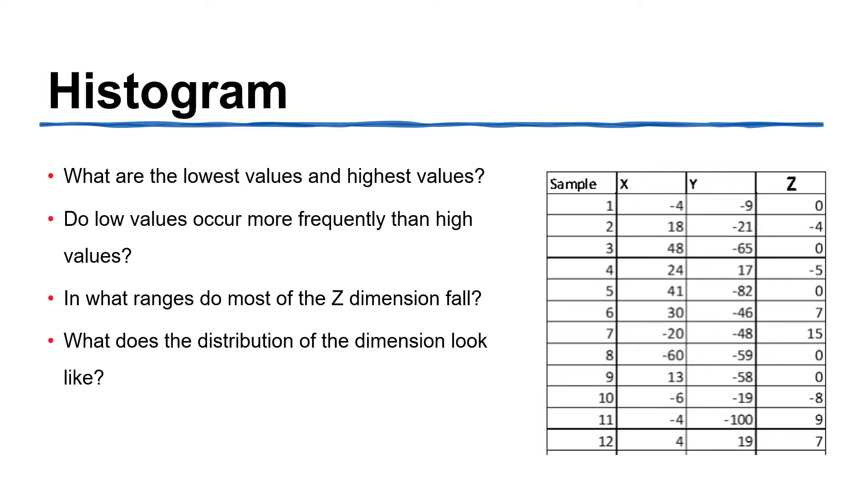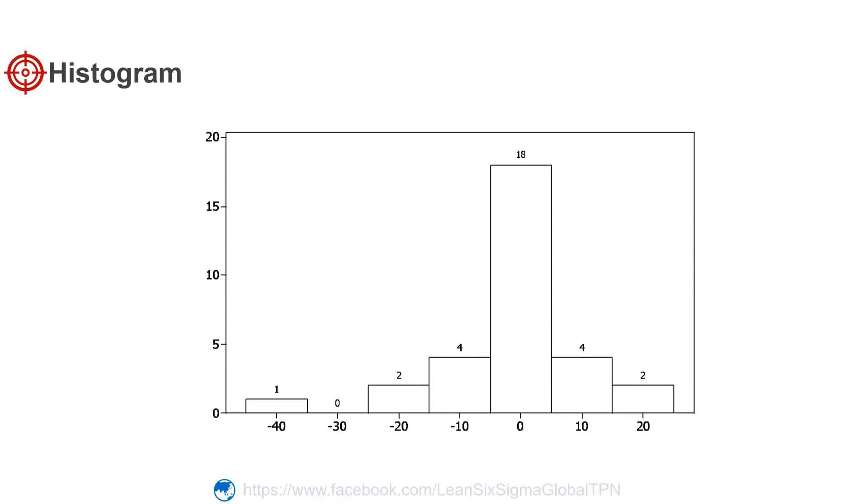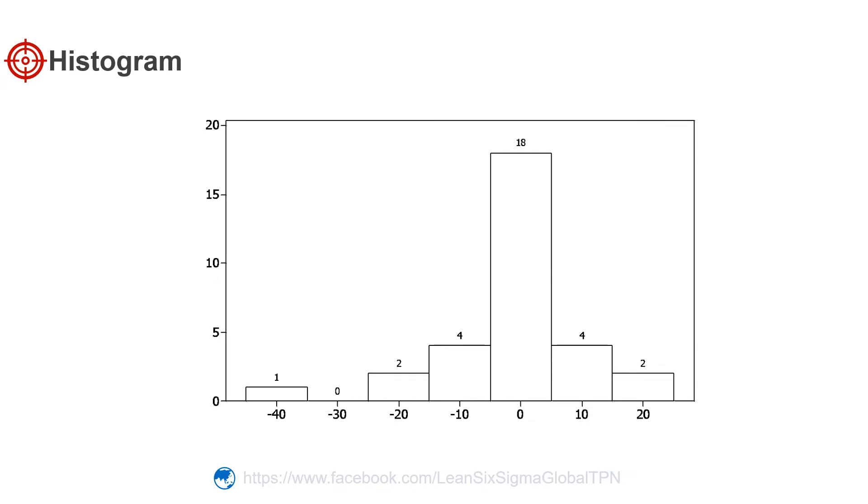The horizontal axis of a histogram represents the scale of the data, which is divided into intervals of equal size. These intervals are called bins.